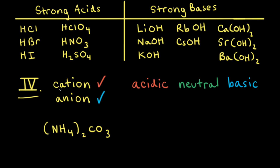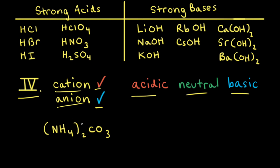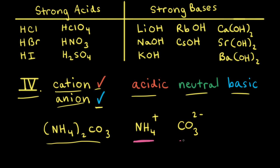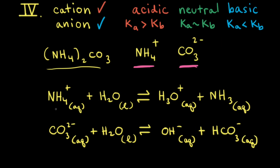The fourth possible combination is where both the cation and the anion will react with water. In this case, the resulting solution can be acidic, neutral, or basic. As an example, let's think about an aqueous solution of ammonium carbonate. Ammonium carbonate consists of the ammonium cation, NH4+, and the carbonate anion, CO3 2-. The ammonium cation will react with water, and the carbonate anion is a strong enough base to react with water as well. The ammonium ion reacting with water is cation hydrolysis, in which it forms the hydronium ion and ammonia.